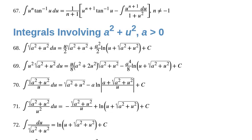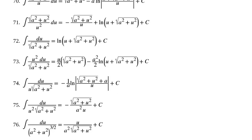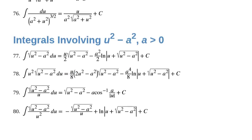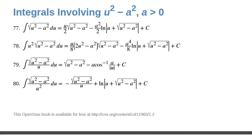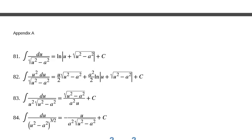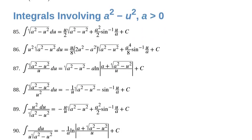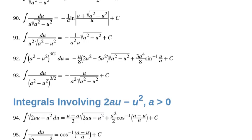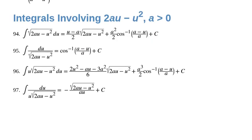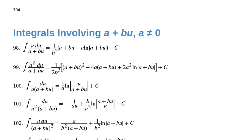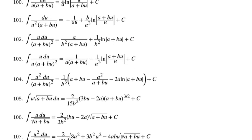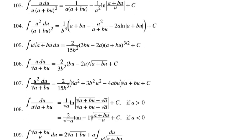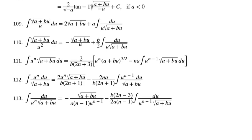If we have a sum of squares, some of these formulas will help us out. If we have a difference of squares where the variable u comes first, these formulas can help us out. If we've got a difference of squares where the constant a squared comes first, or even some with a linear term and a quadratic term together, there are formulas for those as well.